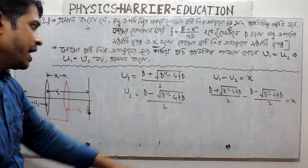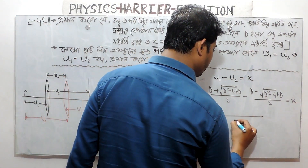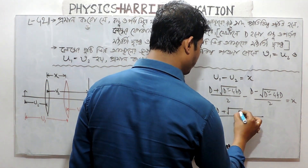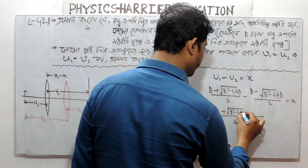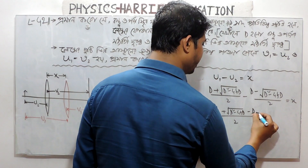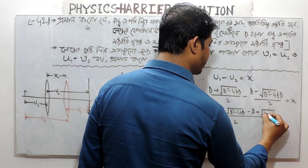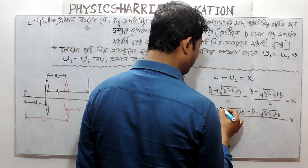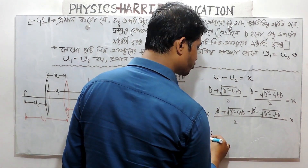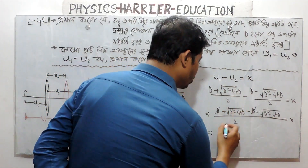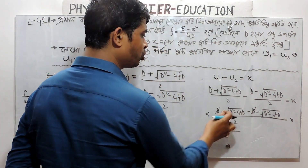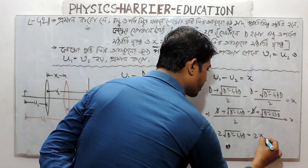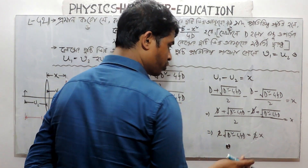x, this is the same. 2, d plus root over d square minus 4fd, minus d, minus plus root over d square minus 4fd. Clear, equals to 2x. Plus d minus d cancel, equals — that's 2 root over d square minus 4fd equals to 2x, then both sides cancel by 2.